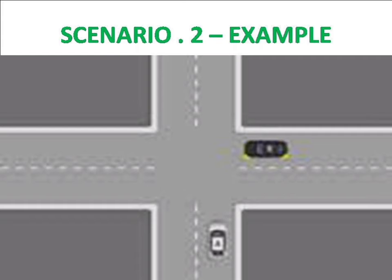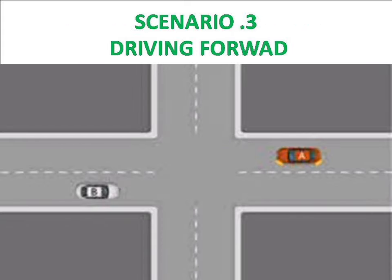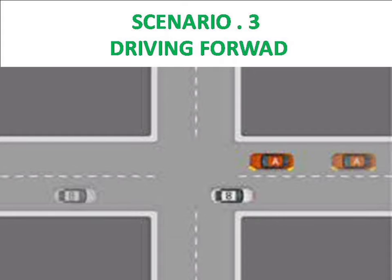Scenario 3: driving forward. A vehicle driving in a straight line has priority over a vehicle changing lanes. In the photo, two vehicles are traveling — the white vehicle is going straight and the red car has put the left indicator. The white vehicle has the highest priority, so the red vehicle must wait until the white vehicle crosses the junction and then go left.